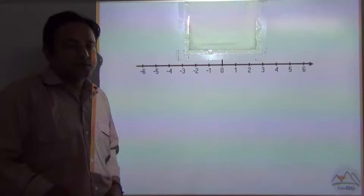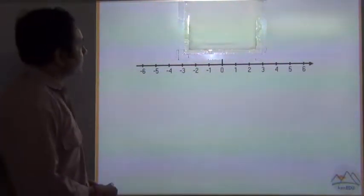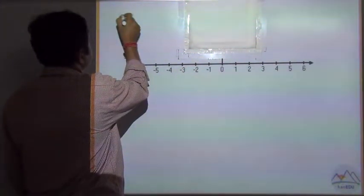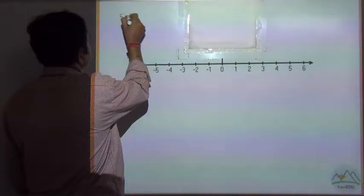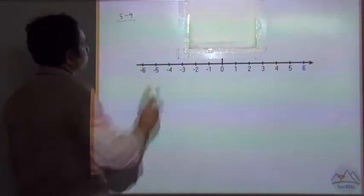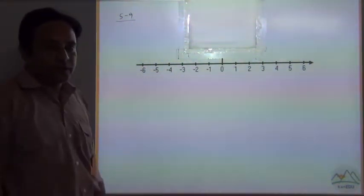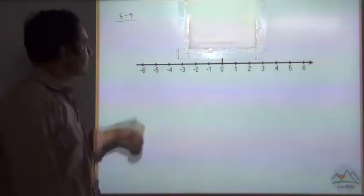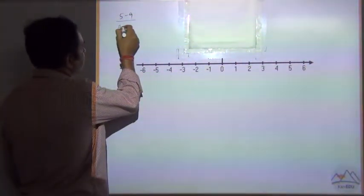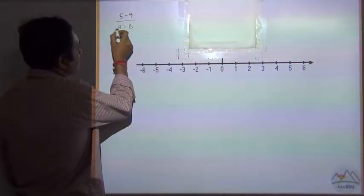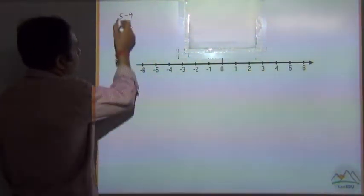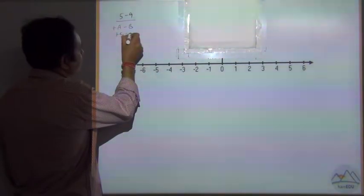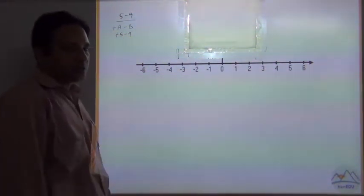In the previous chapter we saw the question 5 minus 9. To solve this question, we already know from Class 5 that this is a question of a minus b. When there is no sign, it means it's a plus sign. So similarly it is plus 5 minus 9.